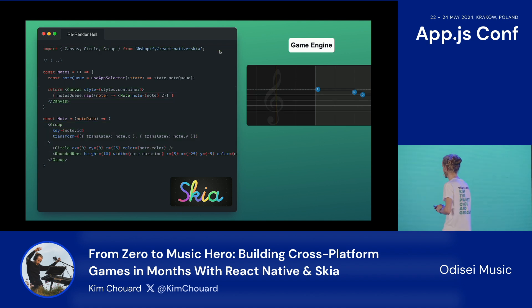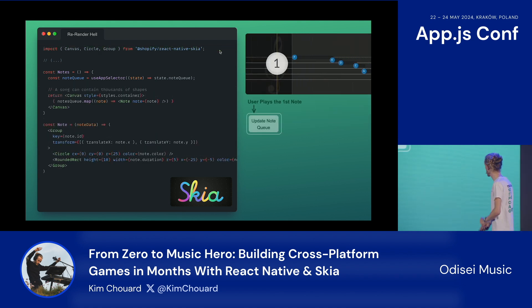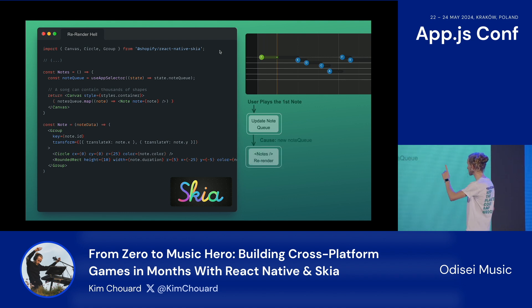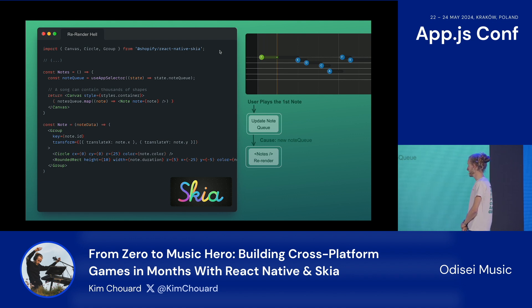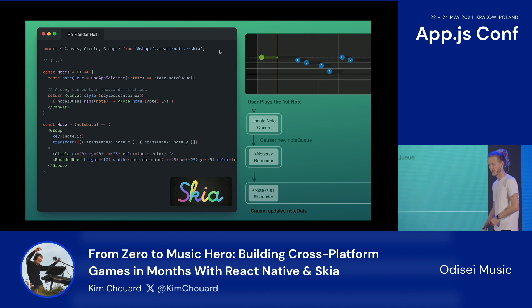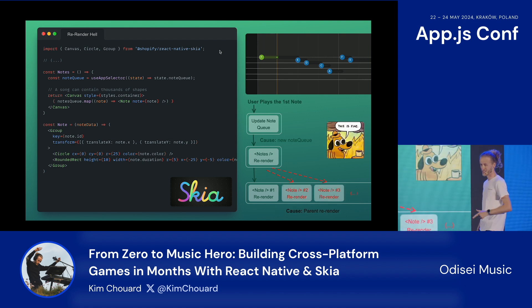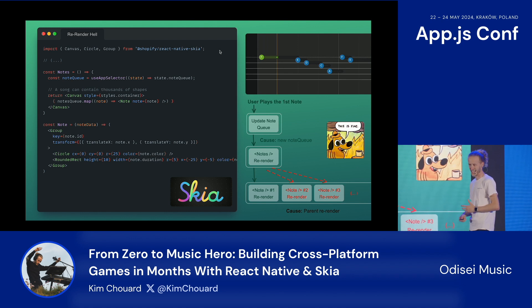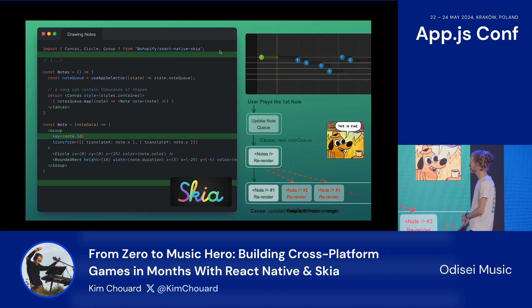Let's talk about rendering for a second. When the user plays the notes, our queue gets updated, which means the notes get re-rendered because it has new information to render, and so does our first note — which is great. But here's the hint: all of our notes get re-rendered. Some of you might be familiar with this, and this is not fine because we might have thousands of notes to re-render and it's going to lag — and again, that's a big no-no.